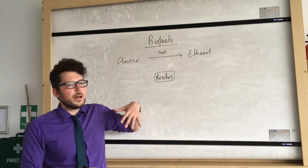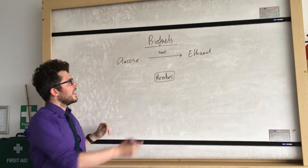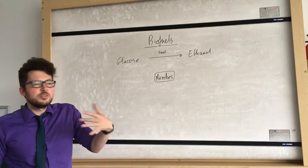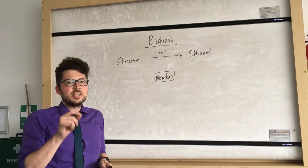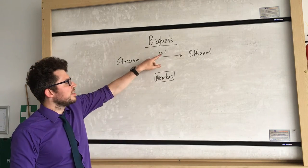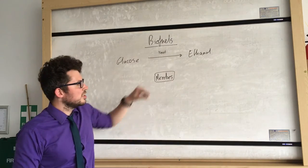Now what we can do to produce biofuels like ethanol is we can use yeast and glucose to actually produce that ethanol. And it's done in anaerobic conditions, that means without oxygen. So if we allow yeast to access glucose in anaerobic conditions it's going to produce ethanol.